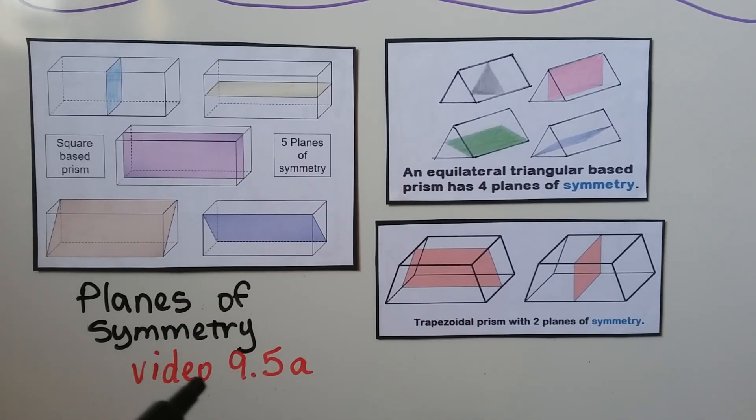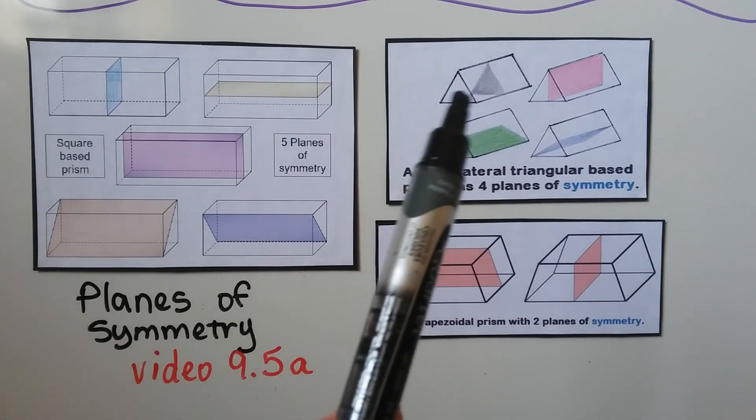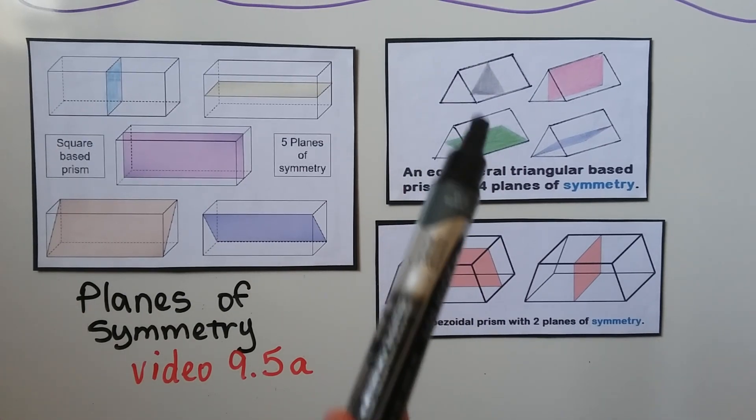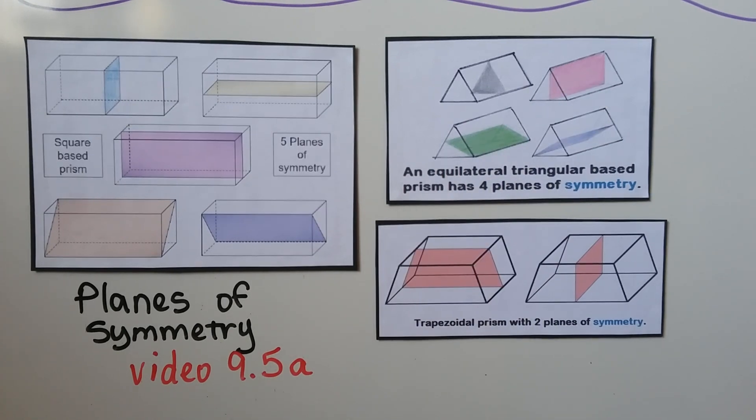Back in video 9.5a in chapter 9, we talked about the planes of symmetry. So we could actually look at these as cross sections. We've got this rectangular prism. And if we slice it right here, we're going to have a square cross section. Here we'll have a rectangular one. Look at this triangular prism. If we slice it like this, we'll have a triangle, but if we slice it this way, we'll have a rectangle.